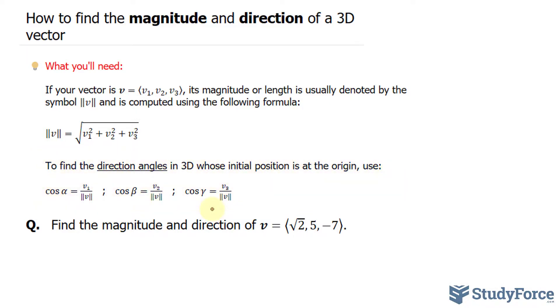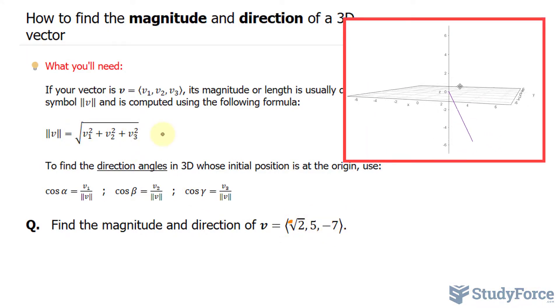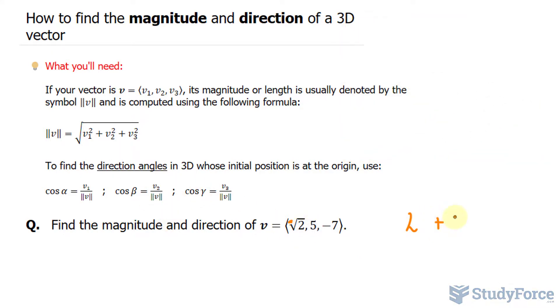Let's begin by finding the magnitude of our vector, the square root of 2, 5, and negative 7. So I'll substitute these values into this formula, where I have the square root of 2 raised to the power of 2 is 2, 5 raised to the power of 2 is 25, and negative 7 raised to the power of 2 is positive 49.